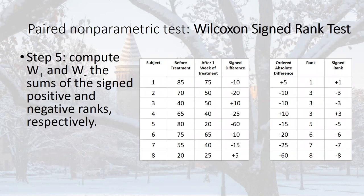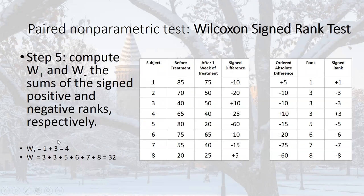Step five: compute W-plus and W-minus — the sum of the positive and negative ranks. W-plus: only ranks 1 and 3 are positive (the two who increased concentration), so 1 plus 3 gives 4. W-minus: the negative ranks are minus 3, minus 3, minus 5, minus 6, minus 7, minus 8. Adding those absolute values gives 32. So 4 is the sum of the positive ranks and 32 is the sum of the negative ranks.